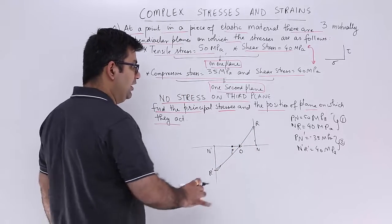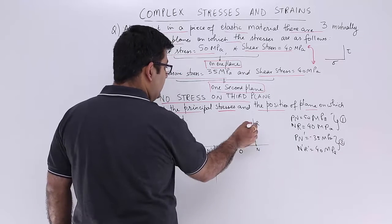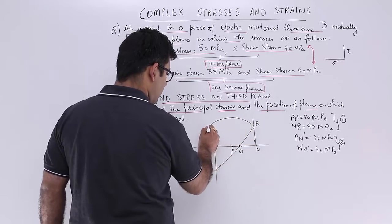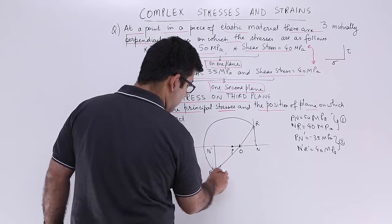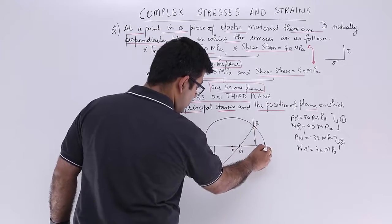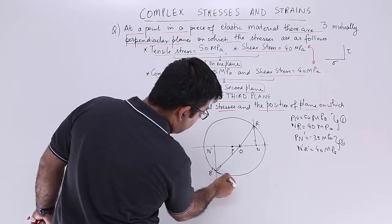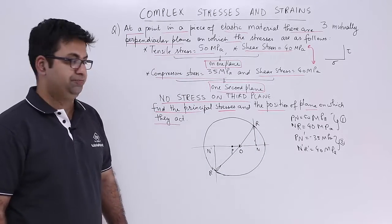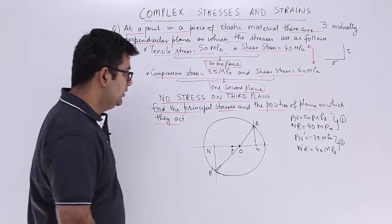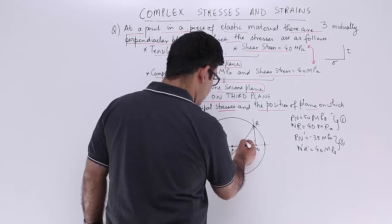I will take the radius as or or or dash and I will draw a circle like this. So this is the Mohr circle that you will draw. This is 2 theta.